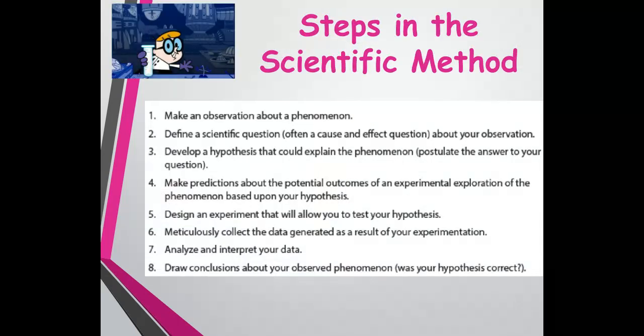To draw it out step-by-step, here are the steps of the scientific method: you make an observation, ask a question, create a hypothesis, make predictions about the outcomes, set up and design an experiment, collect your data, analyze and interpret that data, make conclusions, and then go back and basically start again.